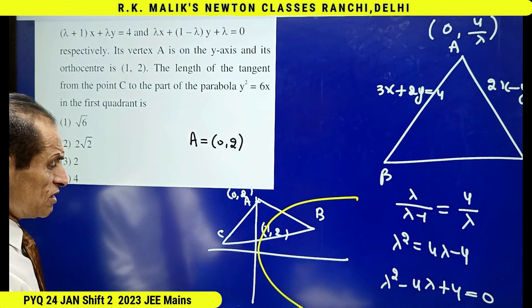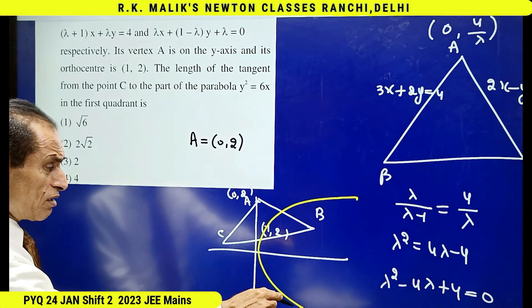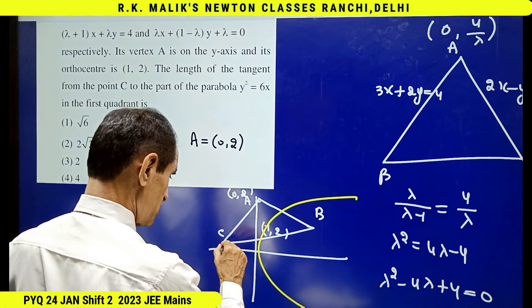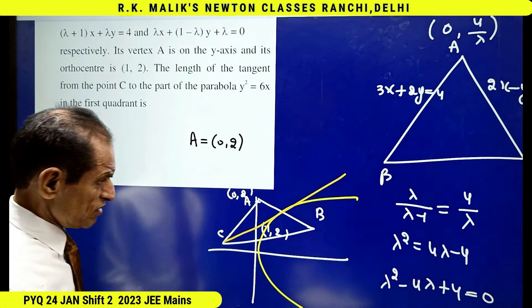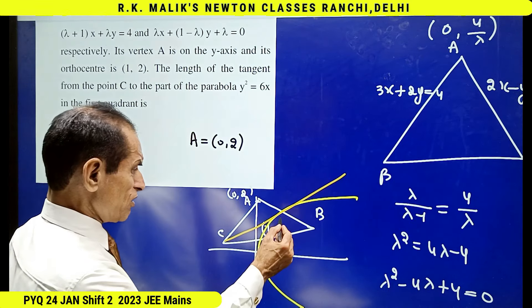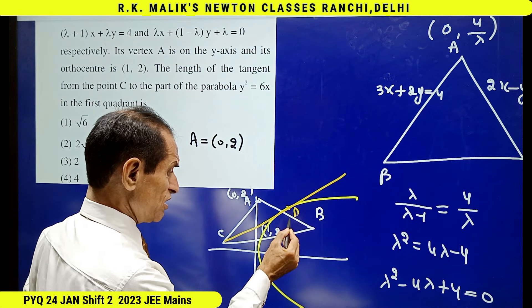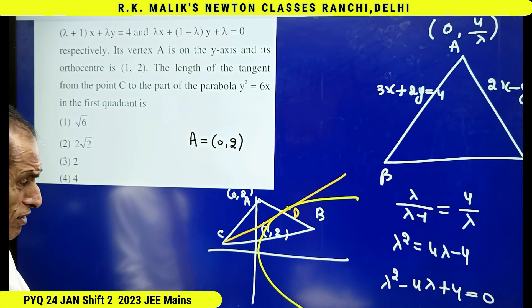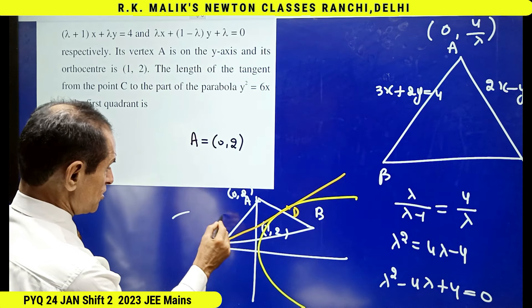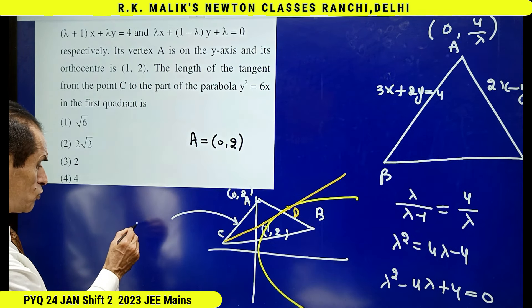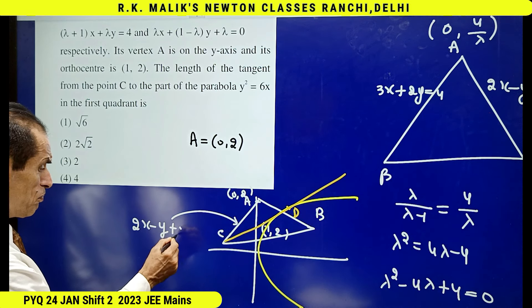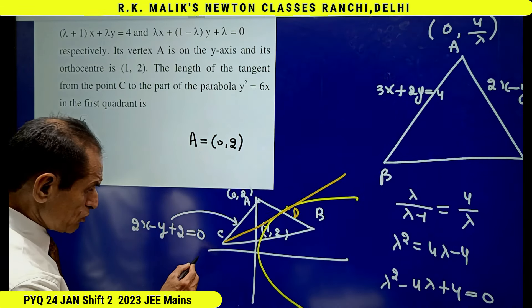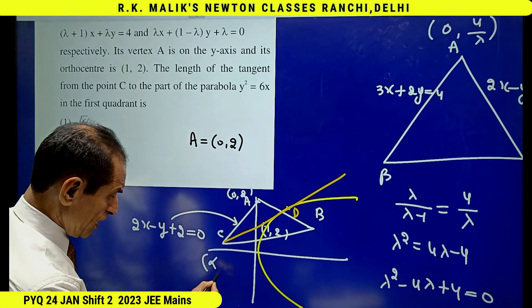A tangent is drawn from point C to the parabola in the portion lying in the first quadrant. The point of contact is called D, and we need to find the length of CD. To find CD, we require the coordinates of point C. The line AC has already been calculated as 2x minus y plus 2 equal to 0.